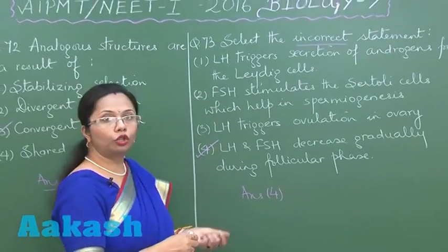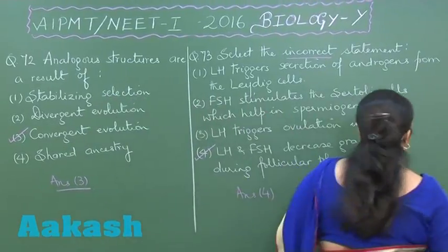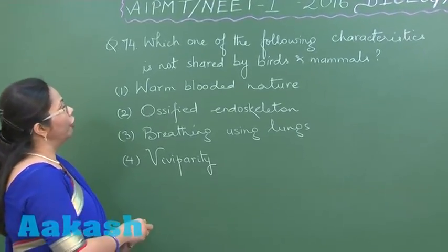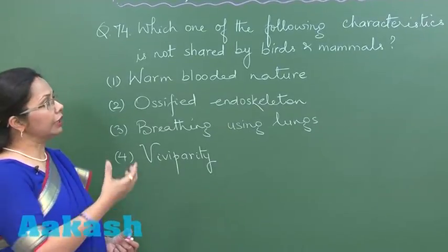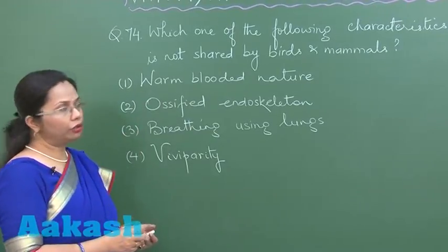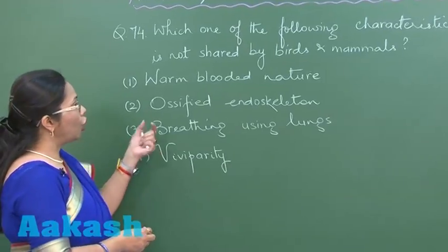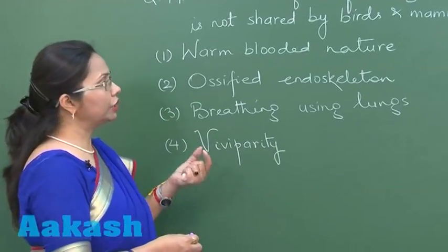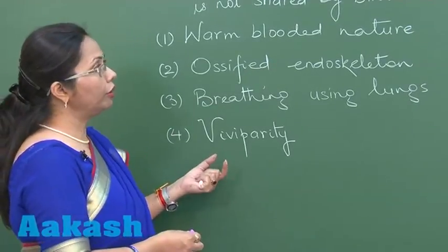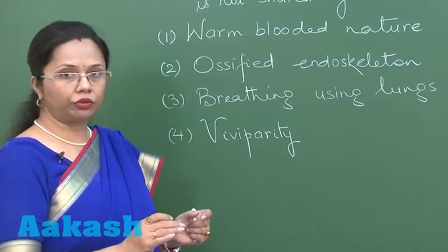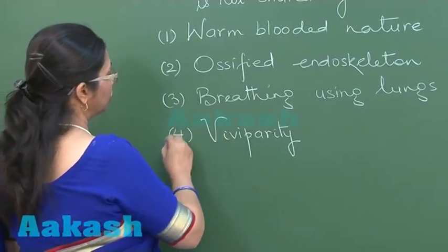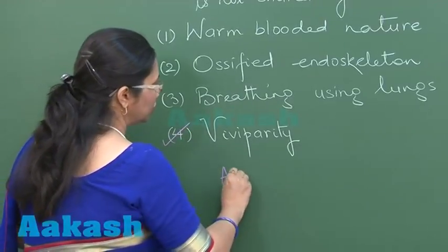Question 74 asks us to pick a characteristic not shared between birds and mammals. Warm-blooded nature — both birds and mammals are homeotherms. Ossified endoskeleton — bony endoskeleton is present in both. Lung breathing is common to them. But viviparity is not shared, because all birds without exception are oviparous, while mammals, with exceptions, are viviparous. So viviparity is the character not shared, and the answer is option 4.